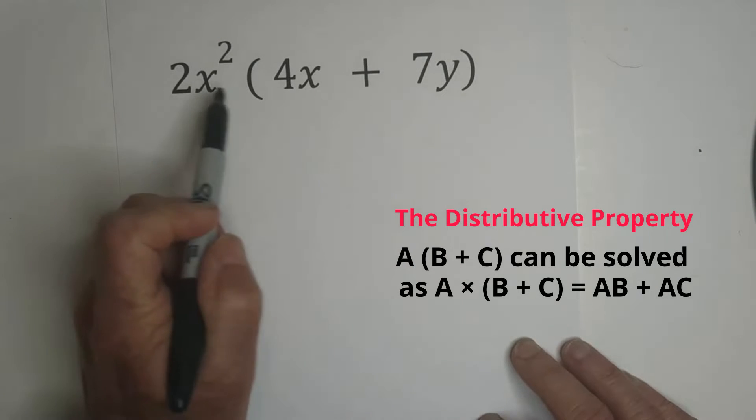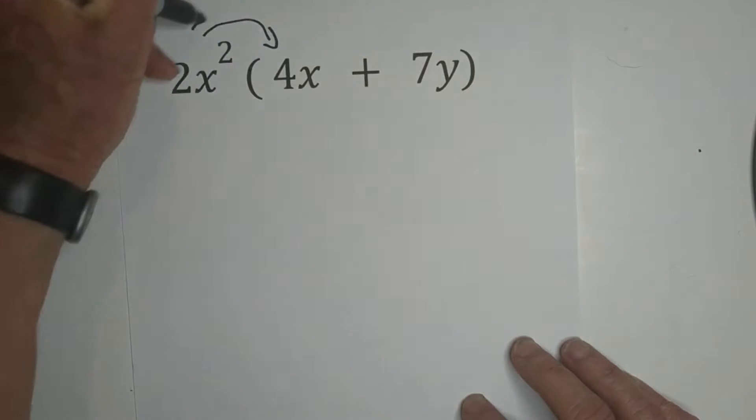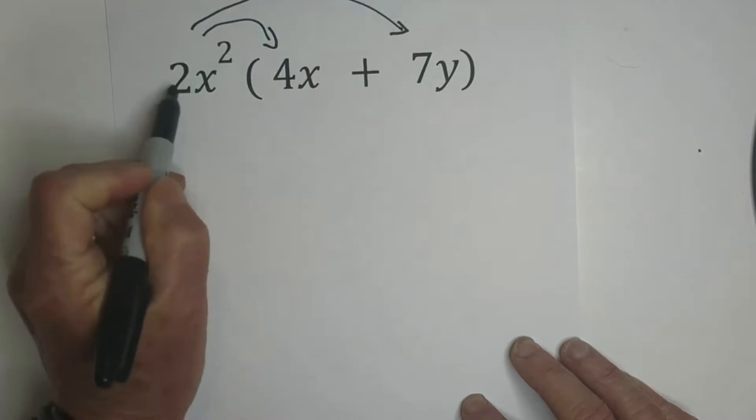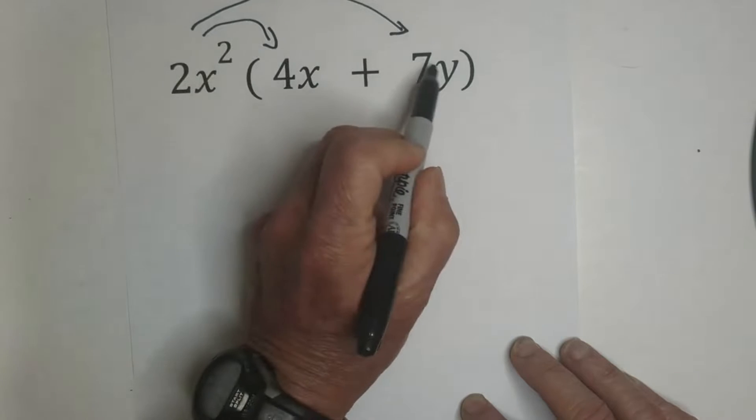With the distributive property, you're distributing this, so you're multiplying the 2x squared times the 4x and multiplying the 2x squared times the 7y.